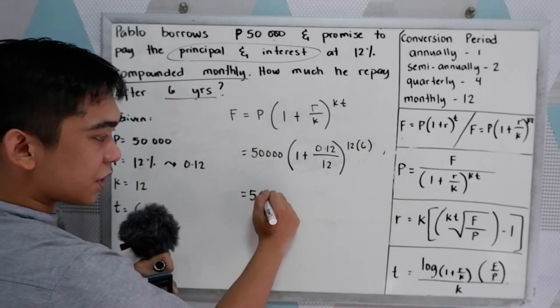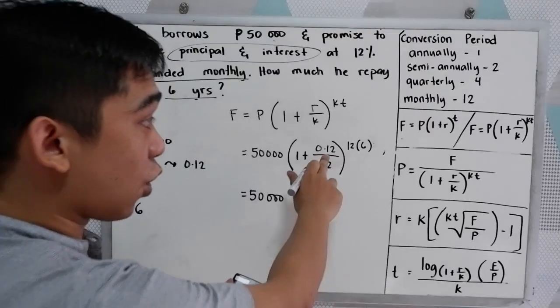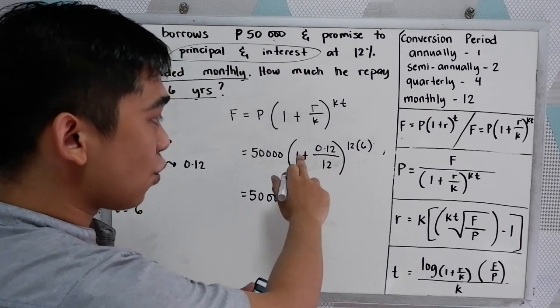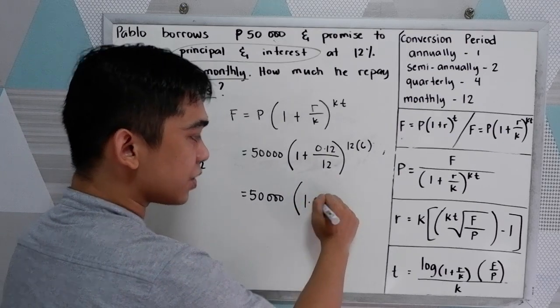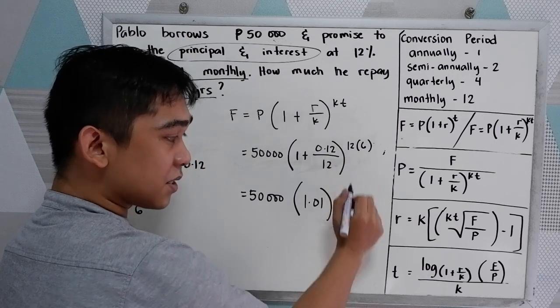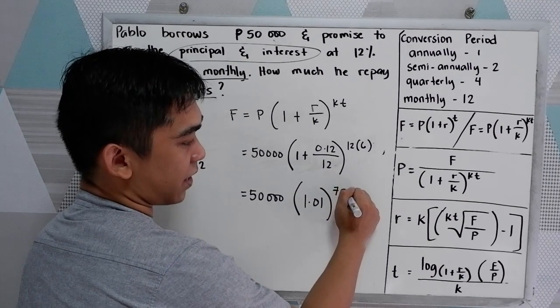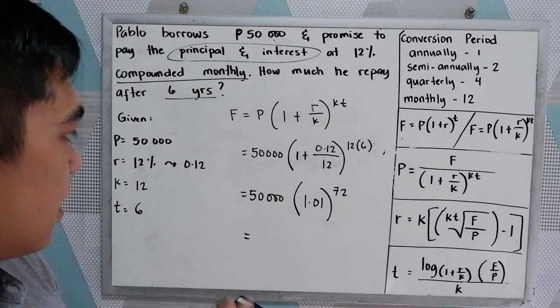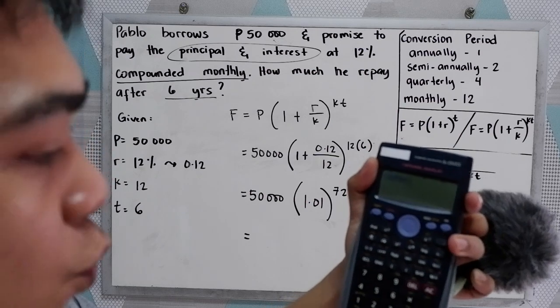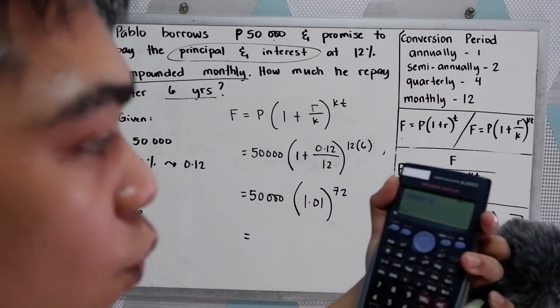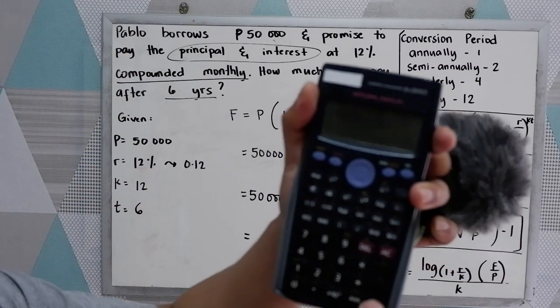Now, we have 50,000 times 1, plus, so you are going to add in your calculator. 1 plus 0.12 all over 12 is 1.01, raised to 12 times 6, that is 72. Just press in your calculator 50,000 times 1.01 raised to 72. That will give us 102,354.97 pesos.